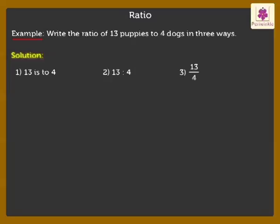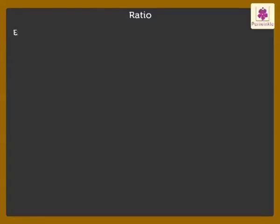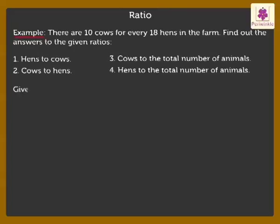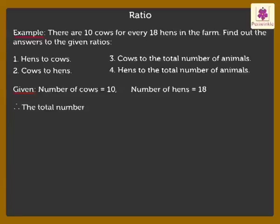Now, let's solve a story problem. There are 10 cows for every 18 hens in the farm. Find out the answers to the given ratios. Let's write the statements first. Number of cows is equal to 10. Number of hens is equal to 18. Firstly, we find the total number of animals, which we get as 28.